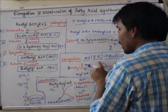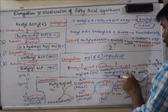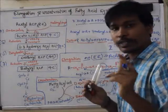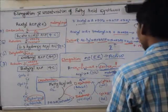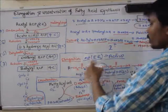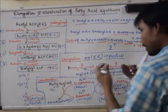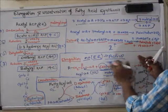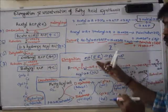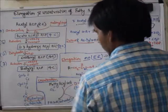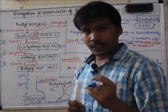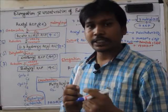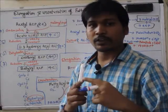An important distinction: in the mitochondria, acetyl-CoA is required for elongation, not malonyl-CoA. So acetyl-CoA is used in mitochondrial elongation, whereas malonyl-CoA is used in the endoplasmic reticulum. This was the elongation process occurring in both the endoplasmic reticulum and mitochondria.